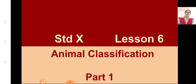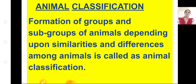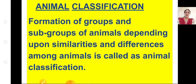The formation of groups and subgroups of animals depending upon similarities and differences among animals is called animal classification. Suppose we don't classify children in different standards and all are mixed together — it becomes difficult for teachers to teach. Same way, when we group students into 9th standard and 10th standard, they are of same category. Similarly, when we group animals based on similarities and differences, it becomes easier for us to understand.